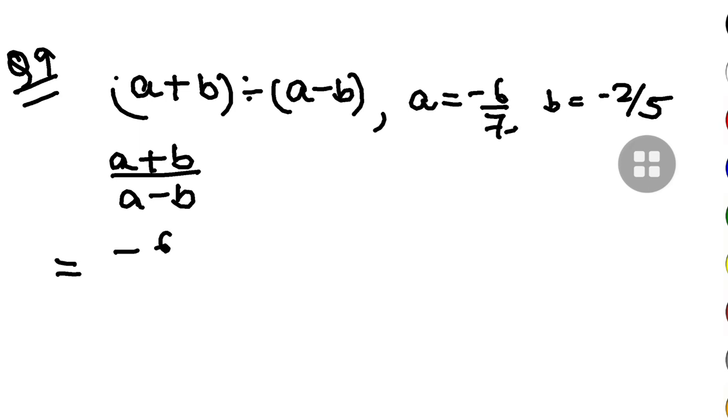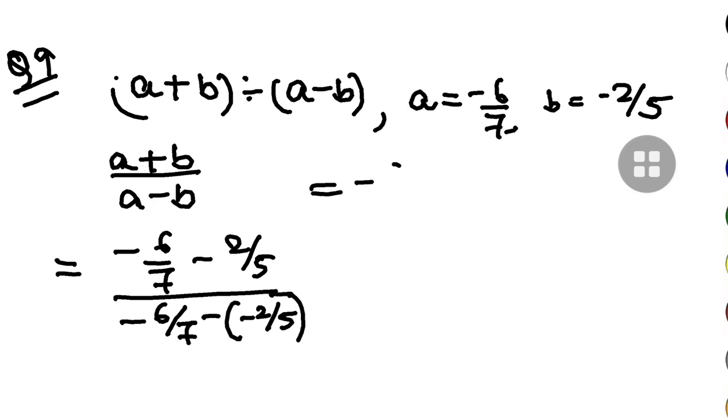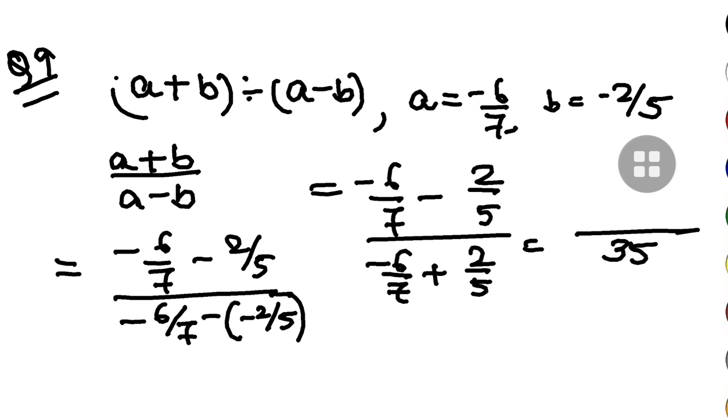So a is minus 6 by 7 minus 2 by 5. Now this is minus 6 by 7 minus 2 by 5 divided by minus 6 by 7 plus 2 by 5. Now in the numerator, my LCM is 35 and you will have minus 30 minus 14.